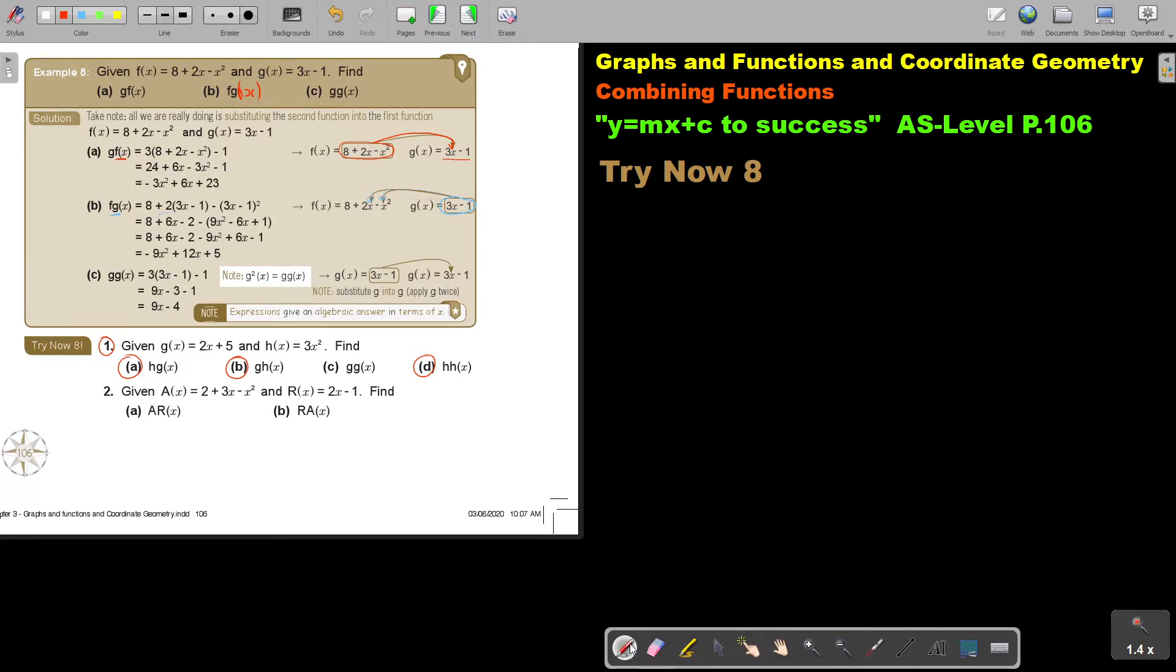Okay, let's start. Number 1a. I have g, let's rather start with it like number 1, and then I have the two functions. g x equals 2x plus 5, and h of x equals 3x squared. Now we start. Now, the first one is number 1a. It's h, g, x.